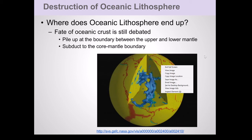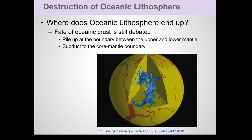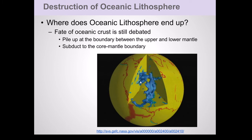What happened to the Farallon plate as it was subducted? We have seismic tomography images — basically a seismic CAT scan of the inside of the planet. There's the western edge of North America, and that blue blob we think represents remnants of the Farallon plate. We're still trying to understand exactly what happens to these plates after they're subducted.